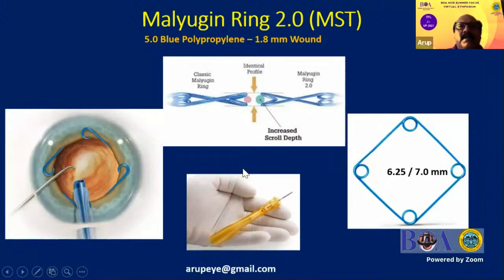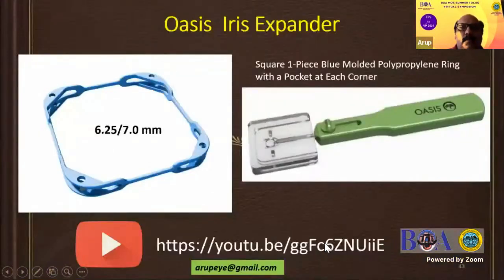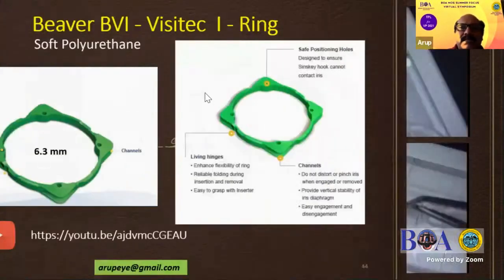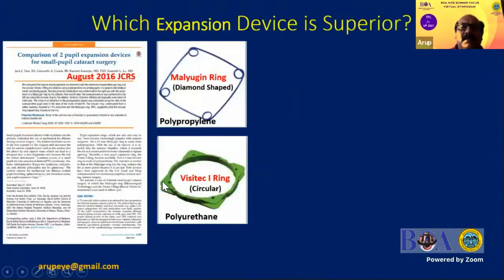Among my non-hook devices, I really enjoy using the Malyugin ring version 2, which goes through a very small incision and provides 6.25 or 7 mm dilation with a thin profile. The BHEX device by Beaver-Visitec is another favorite with a very low vertical profile. I have also used iris expanders from Beaver and from Oasis — they are quite good. The Gupta ring has just come to market; I have only used it in trials and have not been very comfortable with it yet.